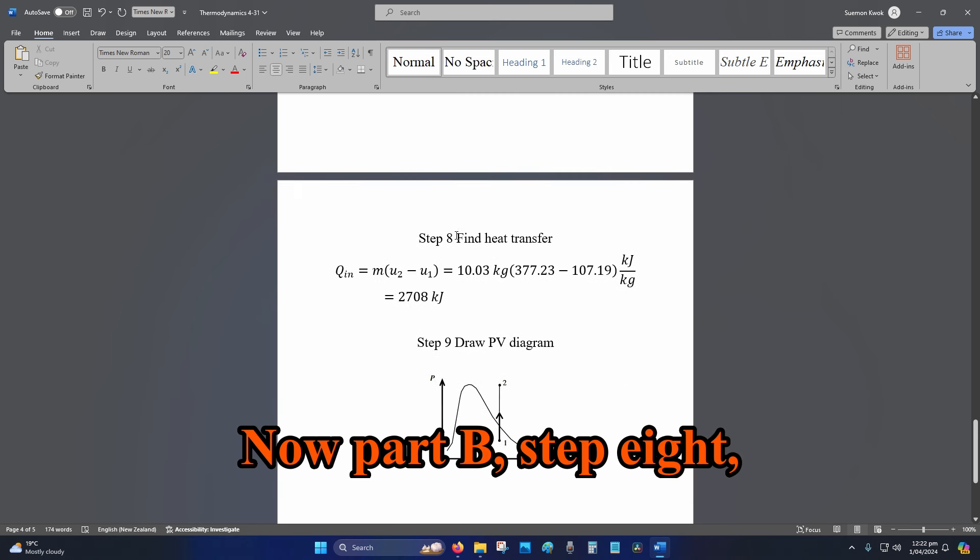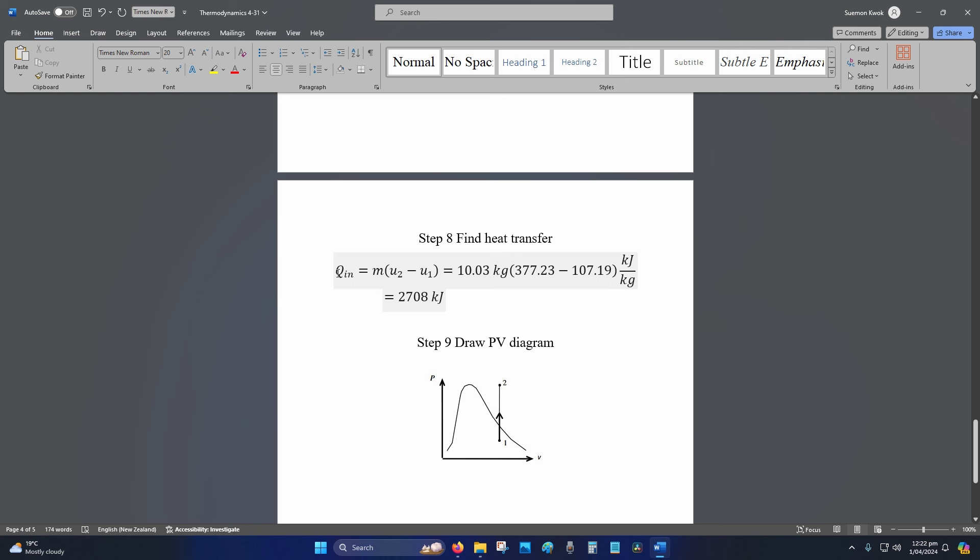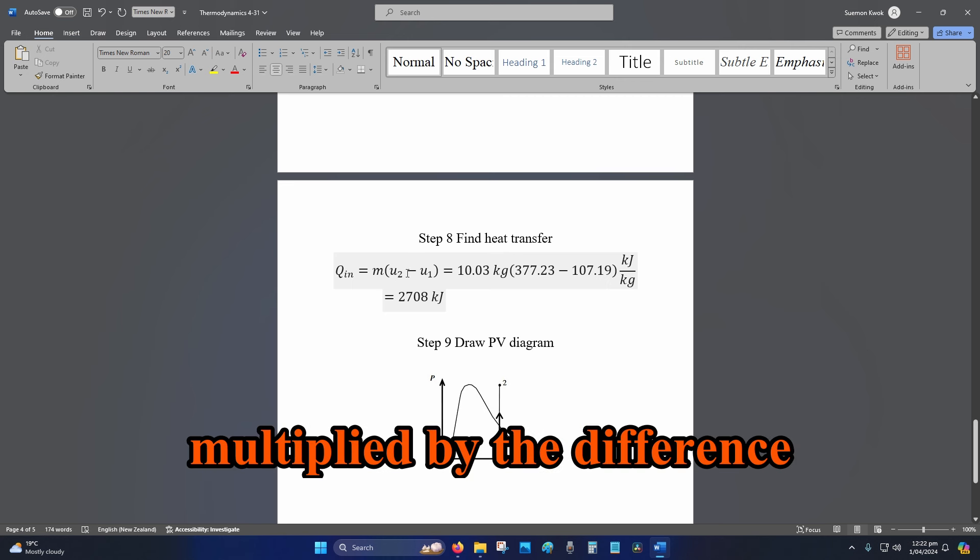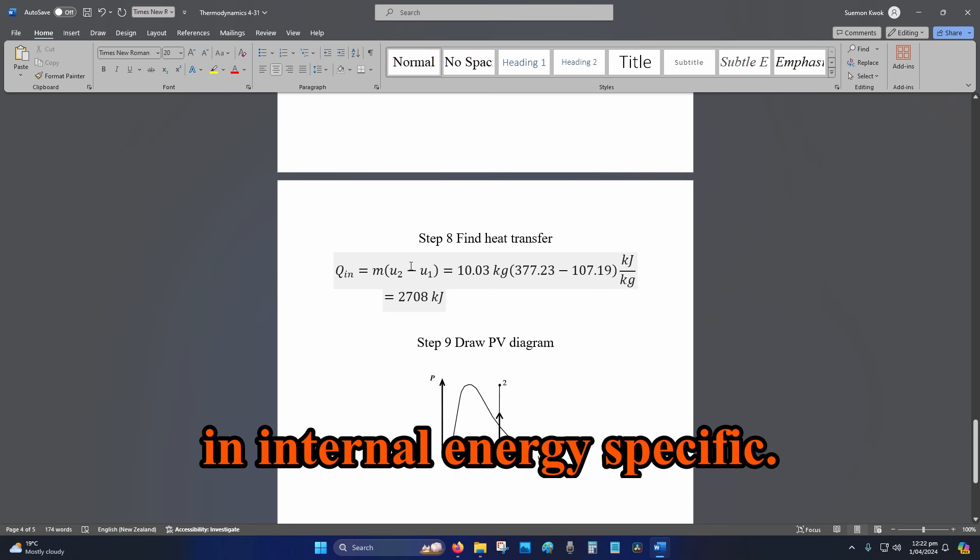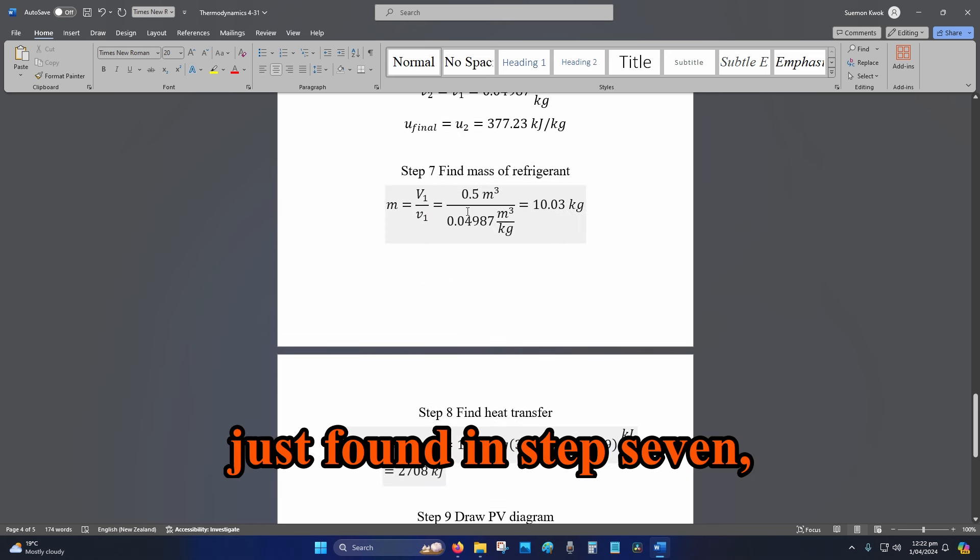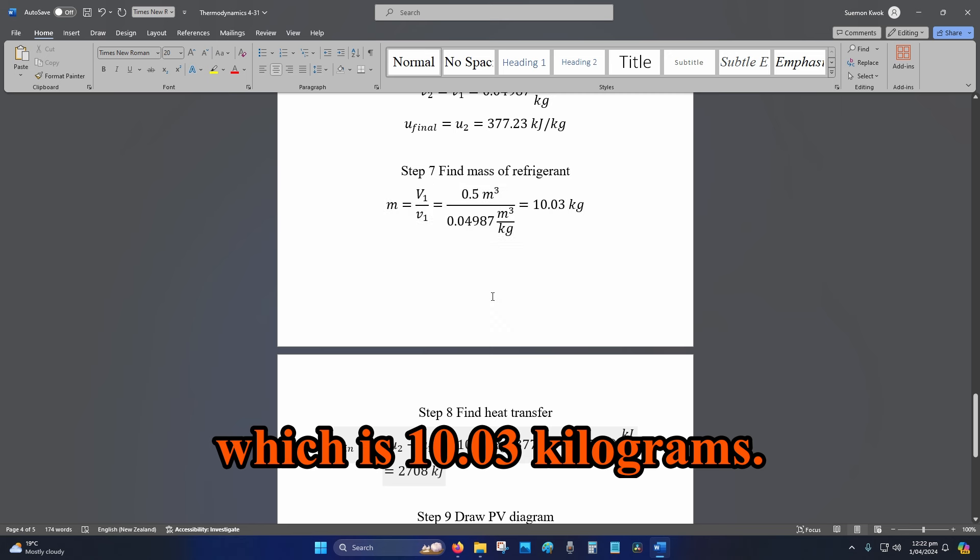Now part B, Step 8: Find the heat transfer. Q_in equals the mass multiplied by the difference in internal energy. Your mass is what you just found in Step 7, which is 10.03 kg.